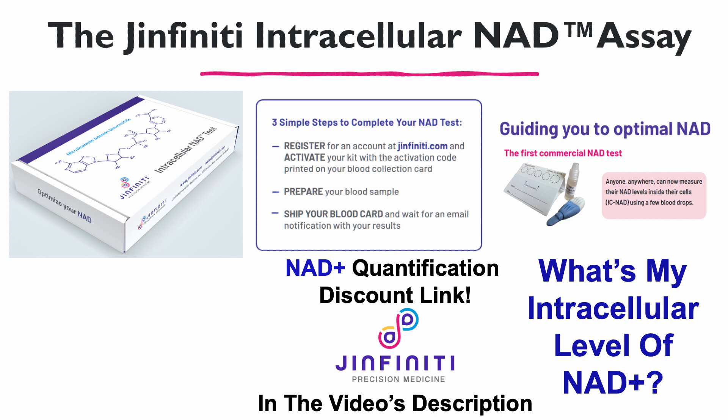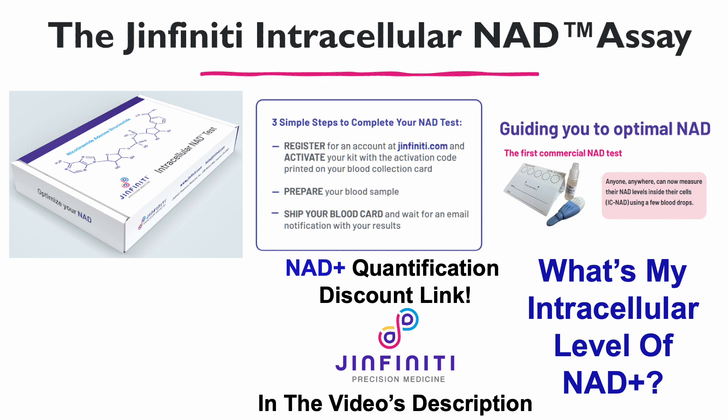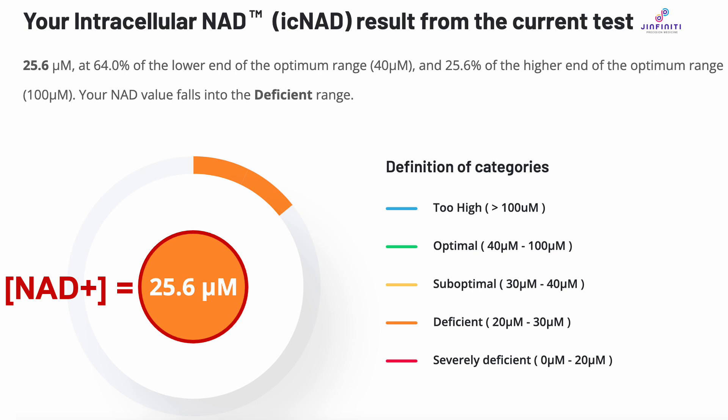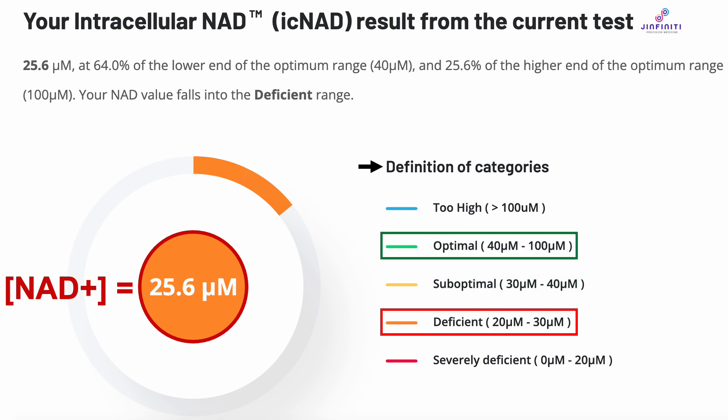The question of the day is: what's my intracellular level of NAD? My concentration of intracellular NAD — this is for all blood cells — is 25.6 micromolar. Is that high or low? For that, we go to GINFINITY's definition of categories, where deficient is defined as 20 to 30 micromolar, whereas optimal would be higher, 40 to 100 micromolar.